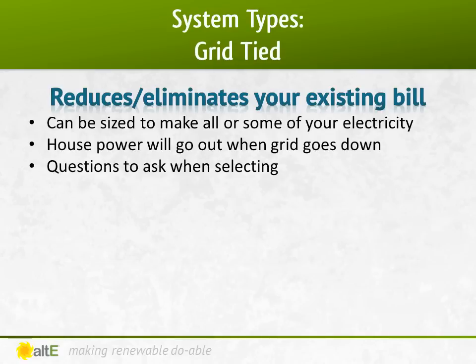The nice thing about a grid-tied system is that it will reduce your electric bill by making some of the power you use. You don't need to make all of your power, although you can if you want to and have the space and budget to do so. But most people just get a system big enough to reduce their bill, but not eliminate it. The downside to a straight grid-tied system is that if the grid goes out, so will your house's power. Even if it's a beautiful sunny day, your system is required by law to turn off.